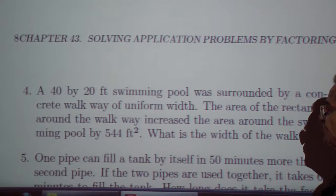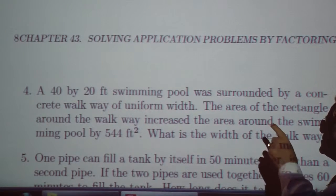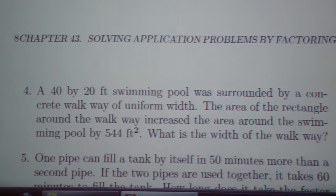Exercise four. A 40 by 20 foot swimming pool was surrounded by a concrete walkway of uniform width. The area of the rectangle around the walkway increased the area around the swimming pool by 544 square feet. What is the width of the walkway?